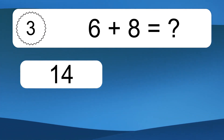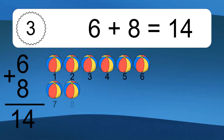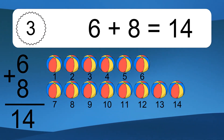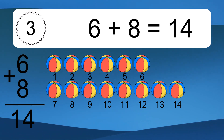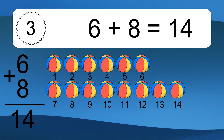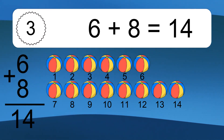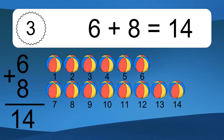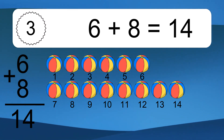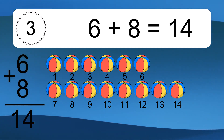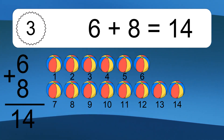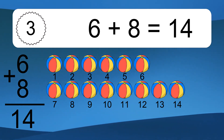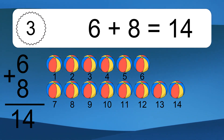6 plus 8 equals what? 6 plus 8 equals 14. Let's count it: 1, 2, 3, 4, 5, 6, 7, 8, 9, 10, 11, 12, 13, 14.